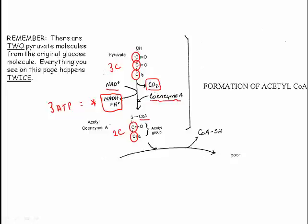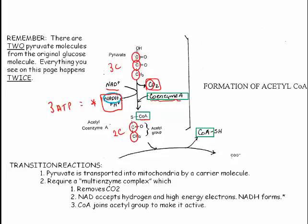CoA is actually only bonded to that molecule for a short period of time and it's there to enable the next step to take place. You can see that the CoA is actually not going to be bonded to that molecule for very long because it's actually leaving the molecule as it's shown here. In the transition reactions, pyruvate is transported into the mitochondria by a carrier molecule embedded in the mitochondrial membrane, and this requires a multi-enzyme complex which actually does all the things we've just talked about.